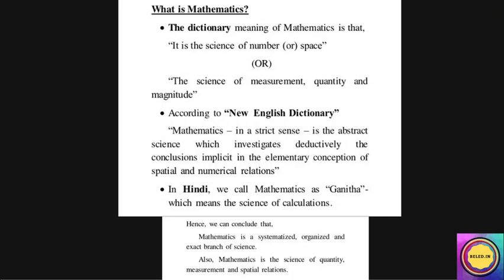According to the New English Dictionary, mathematics in a strict sense is the abstract science which investigates deductively the conclusions implicit in the elementary conceptions of spatial and numerical relationships। यहाँ पर उनका सीधे से कहने का मतलब यह है — जो हमारे normal mathematical numbers हैं, उनके साथ हम reasoning करके कुछ न कुछ conclusion draw करते हैं। जैसे अगर हम addition कर रहे हैं तो deductive reasoning कर रहे हैं, so that at the end हम उनके addition तक एक conclusion तक पहुँच पाएं।